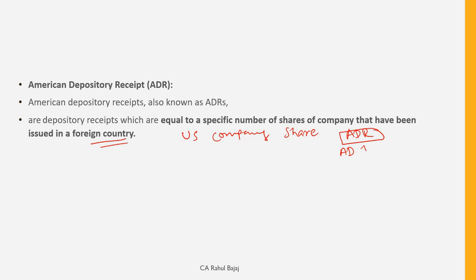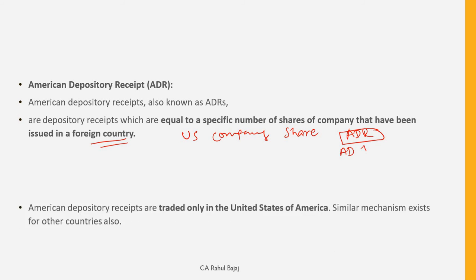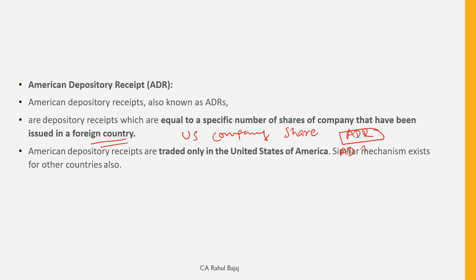Next is ADR — American Depository Receipts. These are shares of a company that have been issued in a foreign country and are traded only in the United States. The global equivalent is GDR — Global Depository Receipts. A similar mechanism exists in other countries as well.